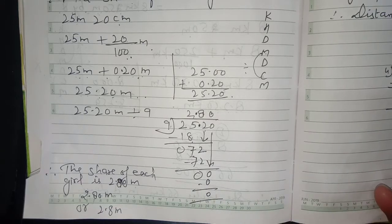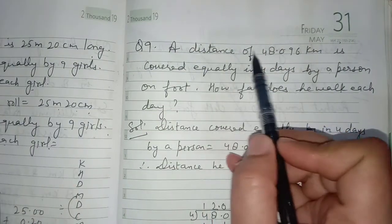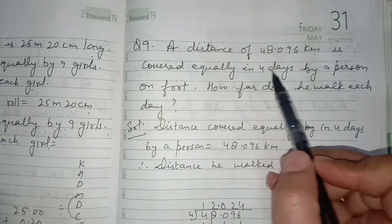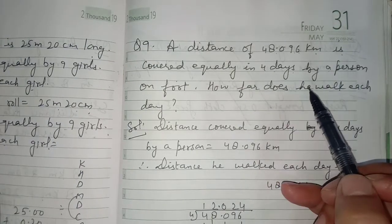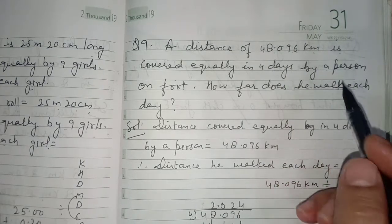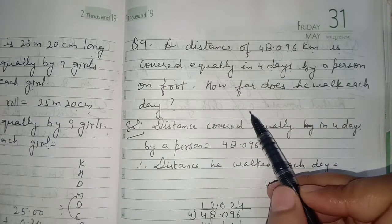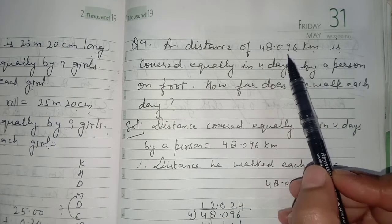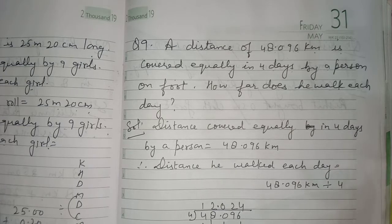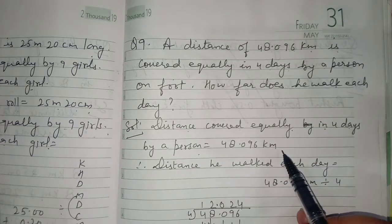Question number 9: A distance of 48.096 kilometer is covered equally in 4 days by a person on foot. How far does he walk each day? If in 4 days he covered that distance, we divide to find the daily distance. Distance covered in 4 days is 48.096 kilometer.